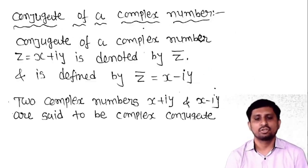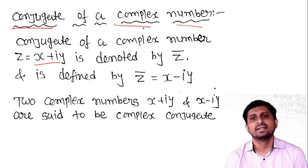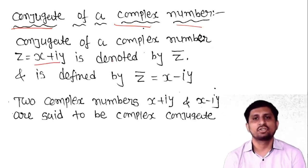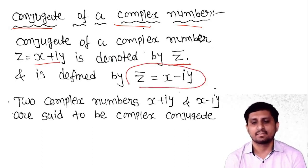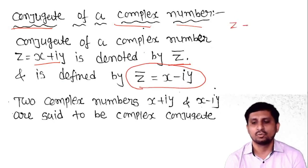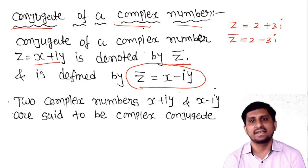Next is the conjugate of a complex number. If z = x + iy is a complex number, then the conjugate is denoted z̄, and z̄ = x − iy. For example, if z = 2 + 3i, then z̄ = 2 − 3i.